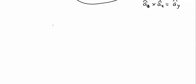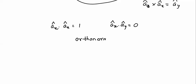Also, if you take the dot products: AX dot AX equals 1, and AX dot AY equals 0. That means they are orthonormal. All the coordinate systems are orthonormal as well as orthogonal.